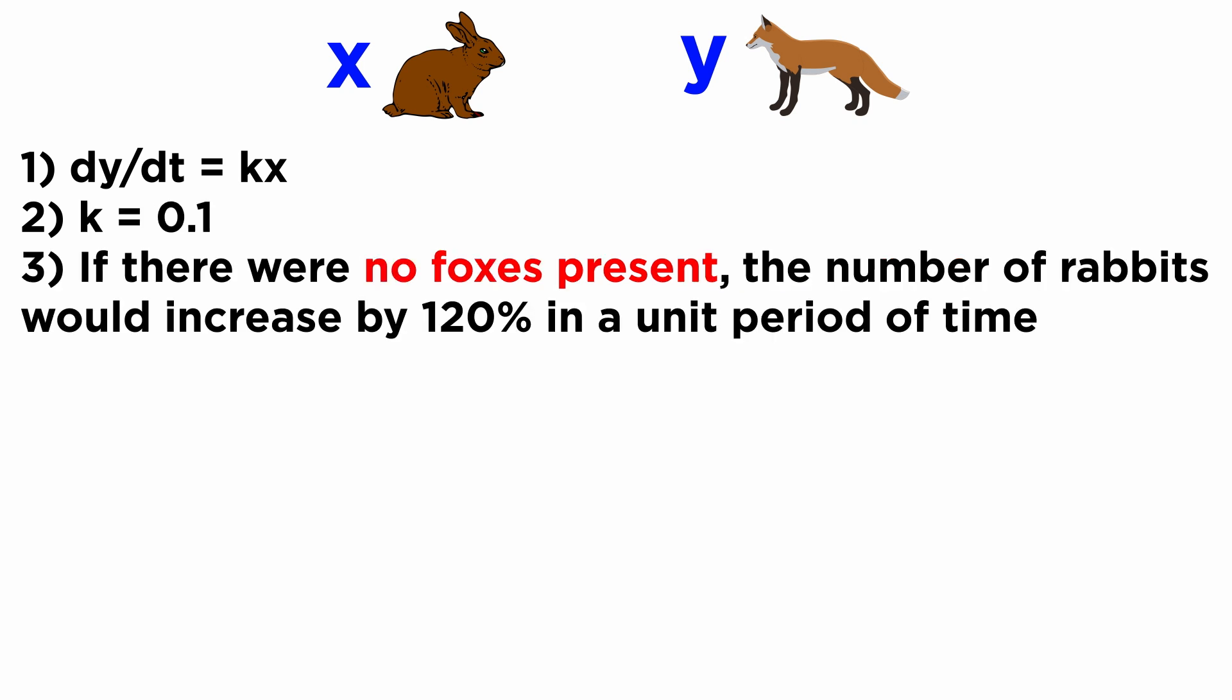Third, if we ignore foxes for a moment, then rabbits would reproduce with exponential growth. We are told that the number of rabbits would increase by 120% in a unit period of time.